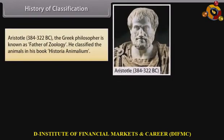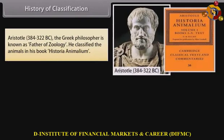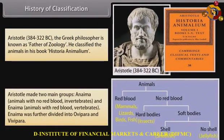History of Classification: Aristotle (384–322 BC), the Greek philosopher, is known as the father of zoology. He classified animals in his book Historia Animalium. Aristotle made two main groups: Anaima, animals with no red blood (invertebrates), and Enhaima, animals with red blood (vertebrates). Enhaima was further divided into Ovipara and Vivipara.